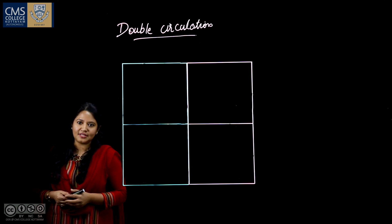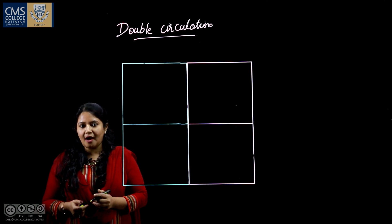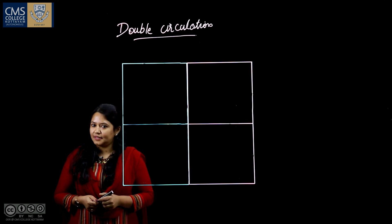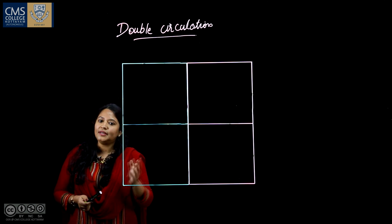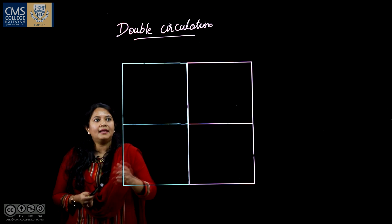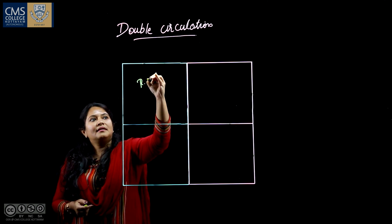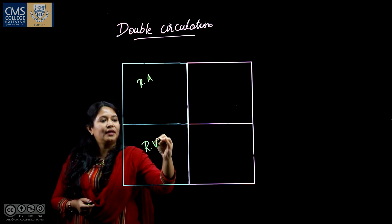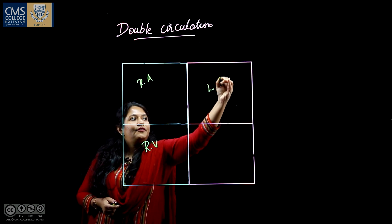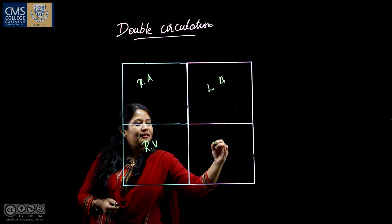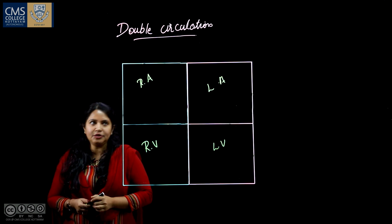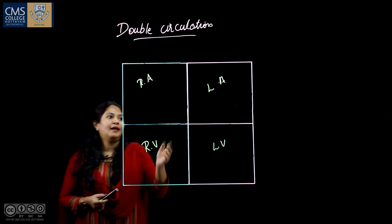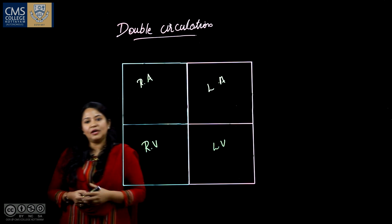We divide the heart into four chambers. The upper parts of the heart are called auricles and the lower portions are called ventricles. Specifically, the four chambers are the right atrium, the right ventricle, the left atrium, and the left ventricle.